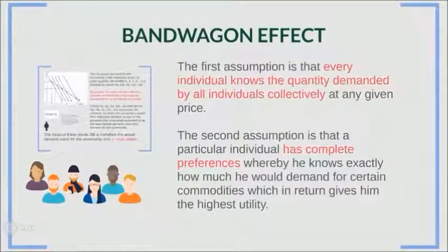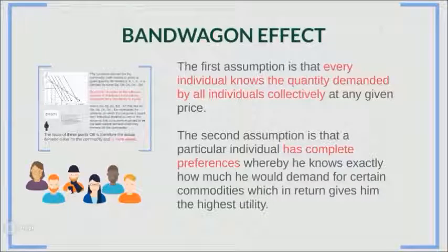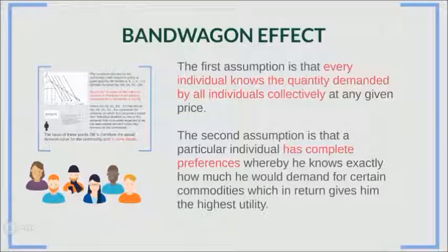We are going to first look at the bandwagon effect in the diagram. To analyze this, we have to assume two things. The first assumption is that every individual knows the quantity demanded by all individuals collectively, or the market quantity demanded at any given price. The second assumption is that a particular individual has complete preferences, whereby he knows exactly how much he would demand for certain commodities which give him the highest utility.